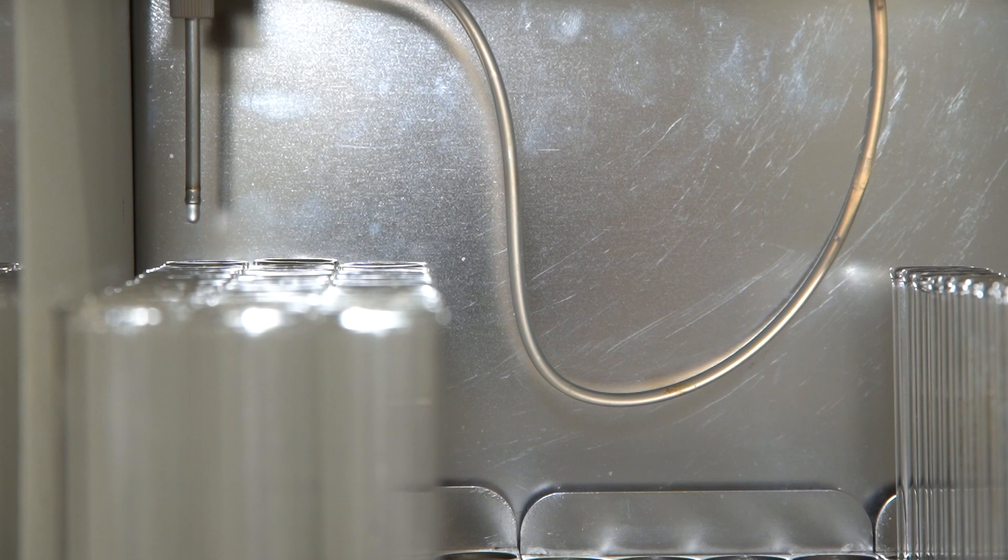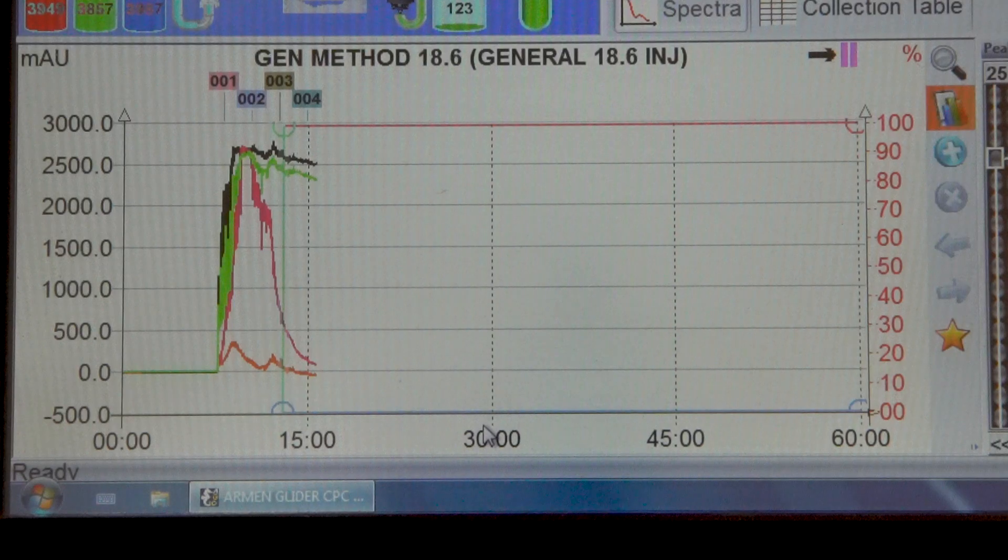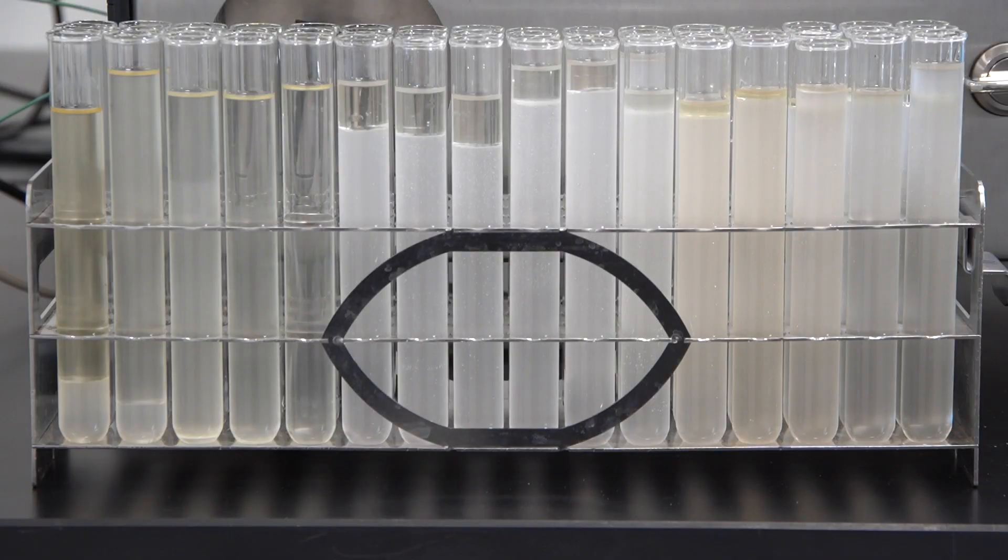The method that I'm going to be running today was designed specifically for THC remediation from CBD distillate. It is difficult to separate them because of the similarities. If you are looking to simply remove the THC, centrifugal partition chromatography is a great way to go about it.